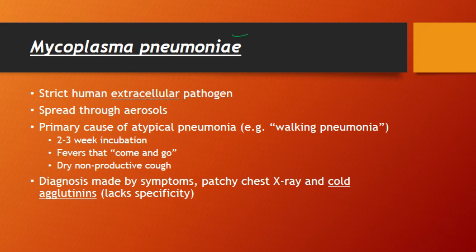Probably the most important organism in this video is Mycoplasma pneumoniae. This is a strict human extracellular pathogen — it does not go intracellular like Listeria or Rickettsia or other atypical bacteria. The reason it's a strict extracellular pathogen is because it's an obligate aerobe, so it requires oxygen; if it goes inside the cell, oxygen could become limiting and that's dangerous to the organism. It's spread through aerosols and can be a normal flora, so occasionally you'll have asymptomatic carriage where it's not causing disease.